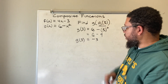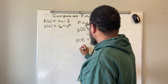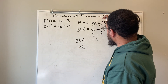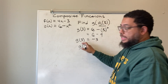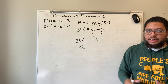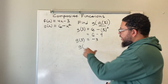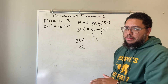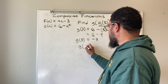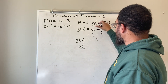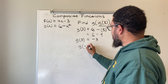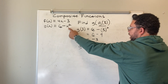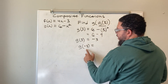Now deal with the outside function. I'm now doing g of negative 3, because g of 3 and negative 3 are synonymous — just like synonyms in English class, different words that mean the same thing. So instead of g of g of 3, I can write g of negative 3. I go back to the same g function and replace the x's with negative 3.